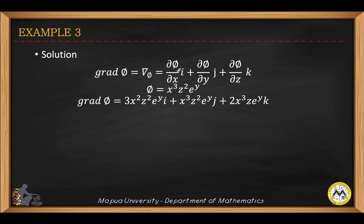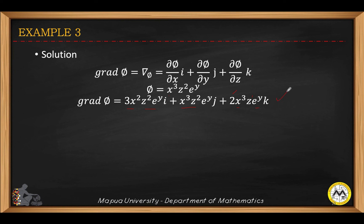We get the first partial derivative with respect to x — z squared and e^y are constant, so the derivative of x cubed is 3x squared. For the second term, we differentiate phi with respect to y — x cubed and z squared are constant, so the derivative of e^y is e^y. For the third component, we differentiate with respect to z — x cubed and e^y are constant, so the derivative of z squared is 2z. This is your gradient of phi.